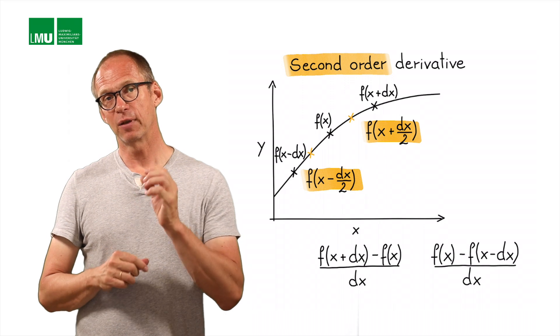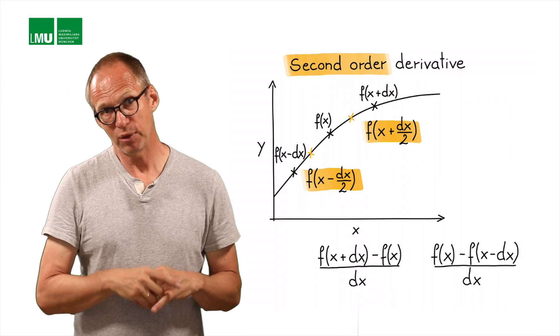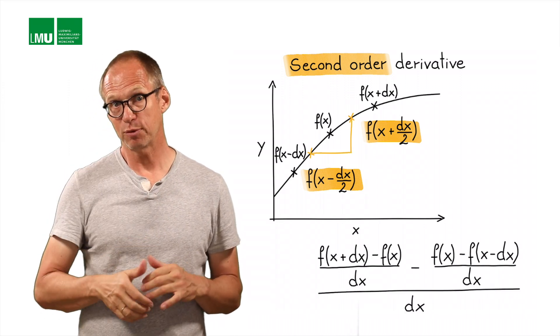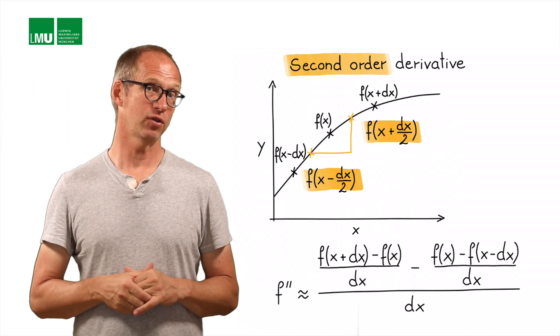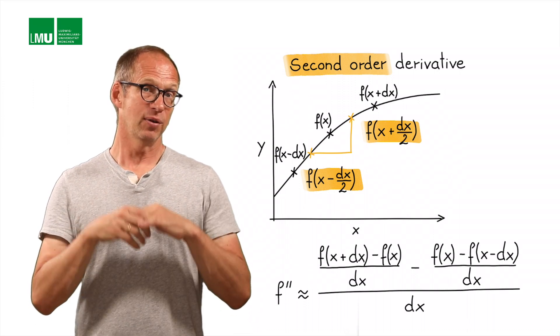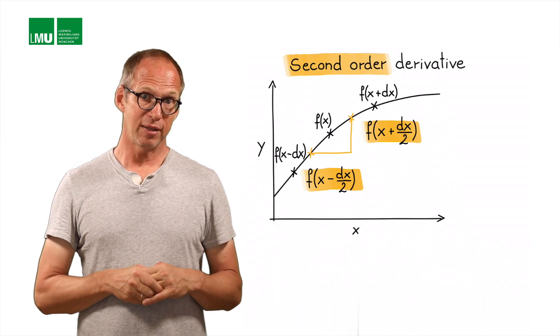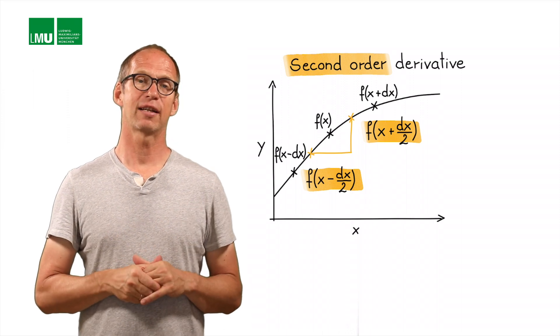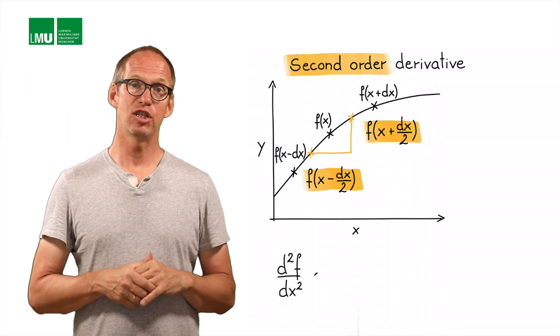Knowing this, we can now write down the difference between these first derivatives and divide by dx, because that's the distance between these two points where we calculated the first derivative. With a little bit of algebra, we end up with an approximation for the second derivative. The second derivative at point x is equal to